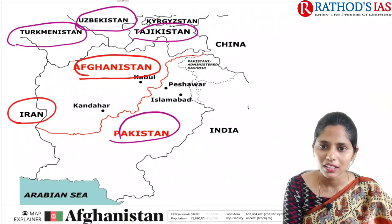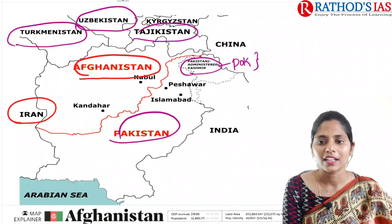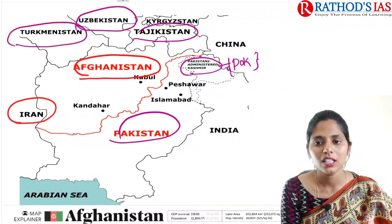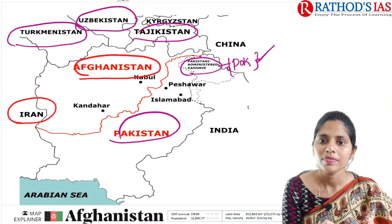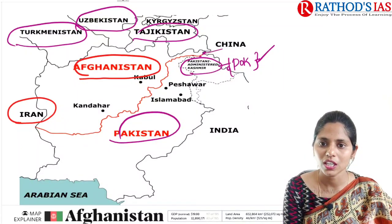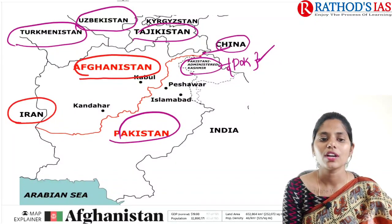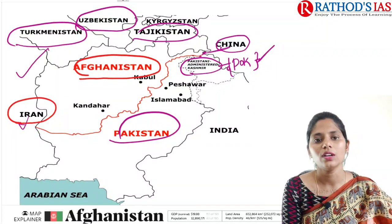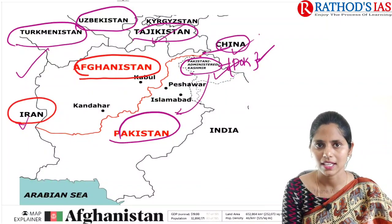This area which comes under PAC administration Kashmir — that is Pakistan-occupied Kashmir — so practically we are not sharing boundary, but technically we are sharing boundary. And even this small part of Afghanistan is also sharing boundary with China. So Afghanistan is sharing boundary with Iran, Turkmenistan, Uzbekistan, Tajikistan, China, and Pakistan-occupied Kashmir.